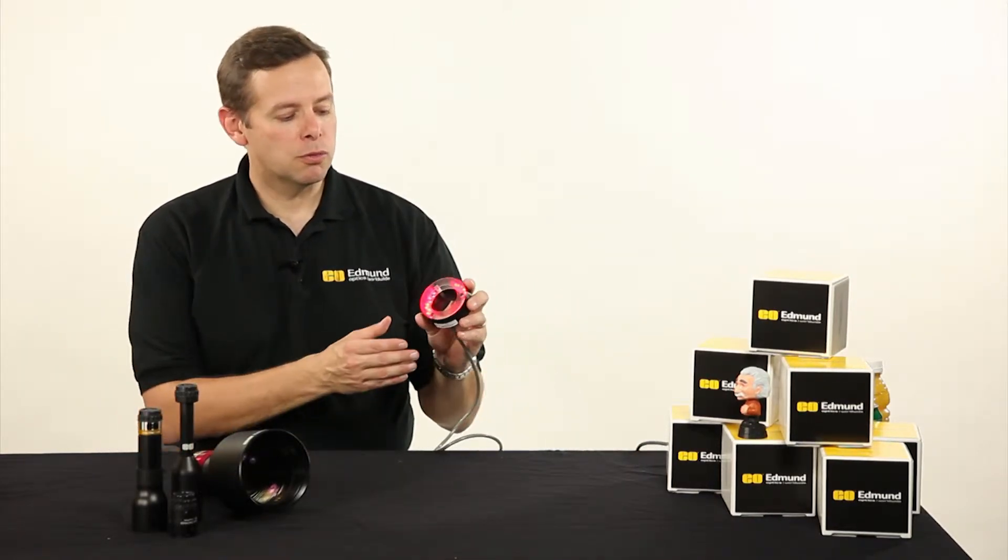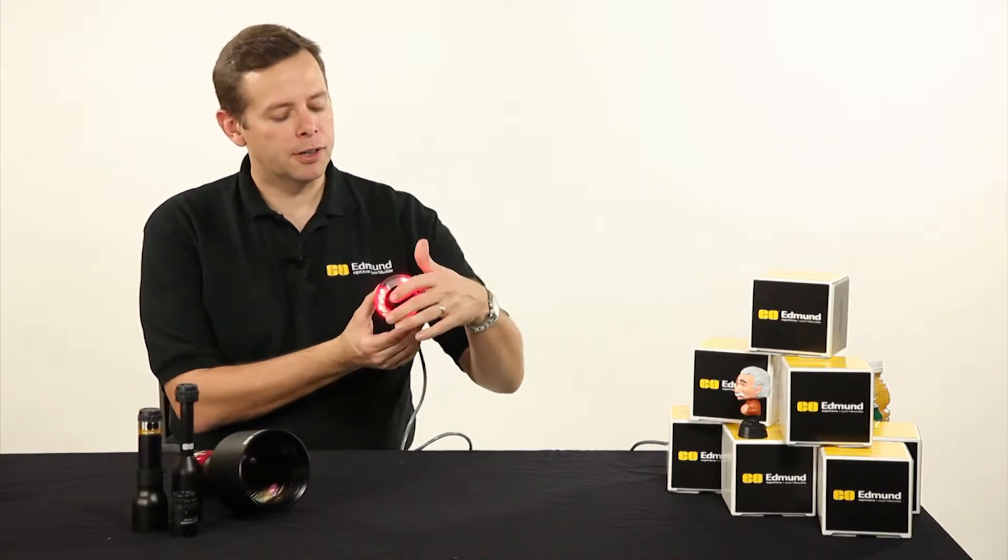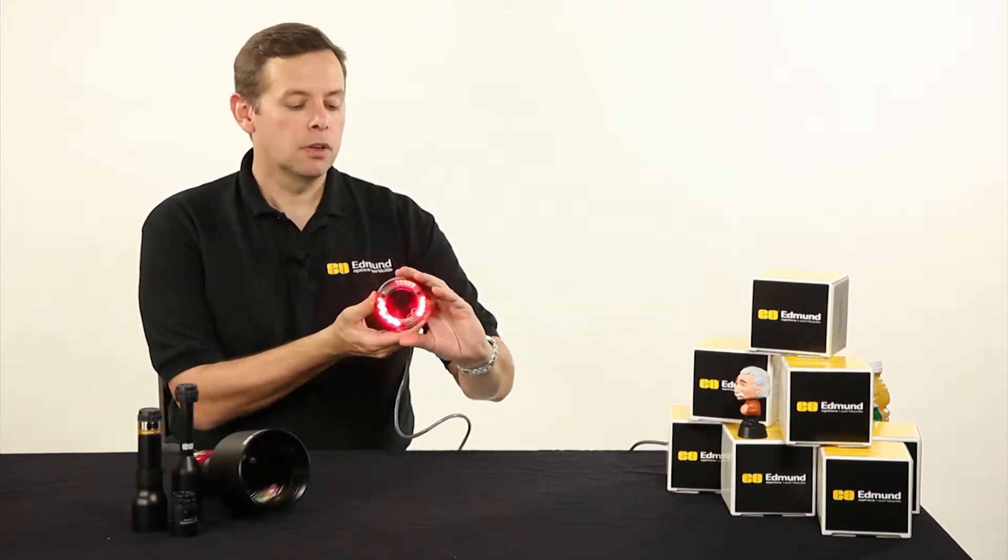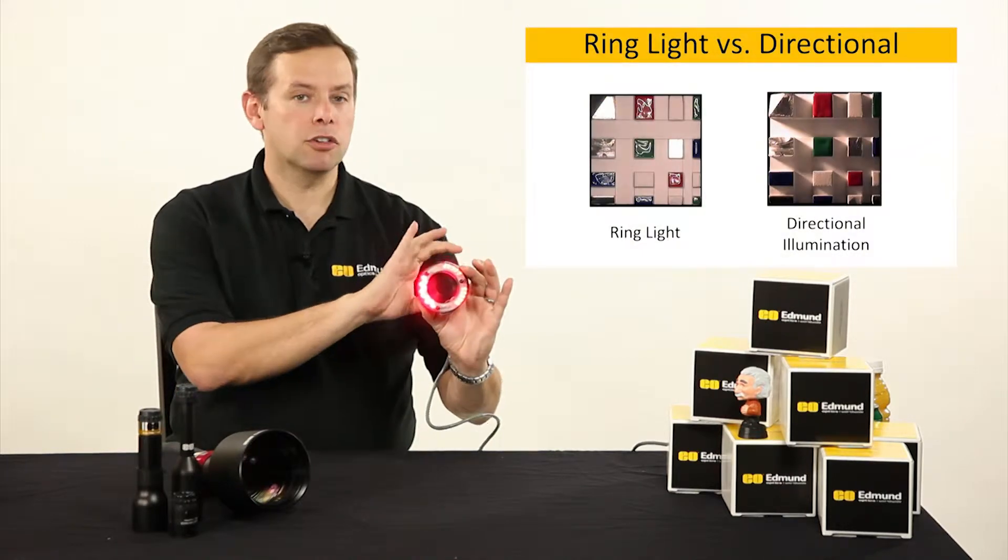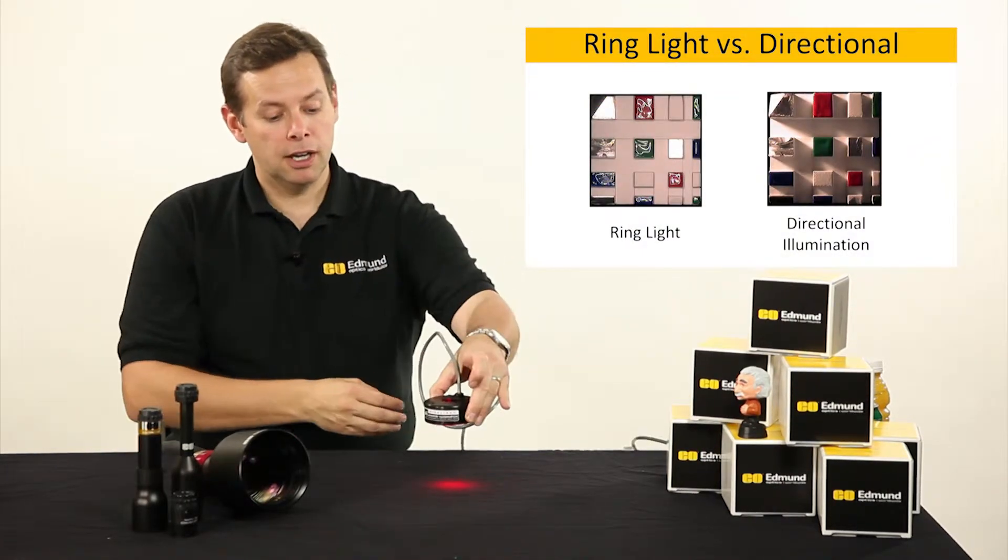As we can see here with this ring light, we have light that's coming from a circular area, and there's a hole in the middle that we will put our lens and camera system behind, and it'll look through down at an object on the table.